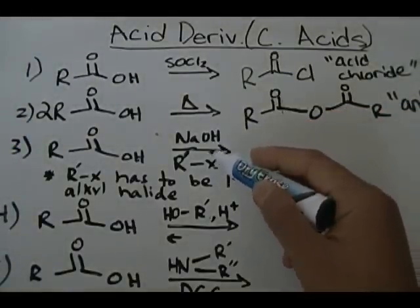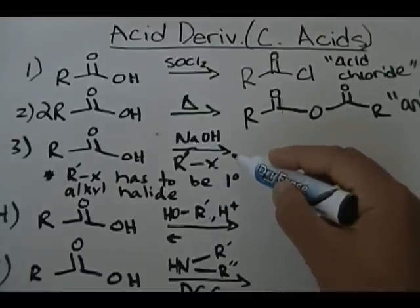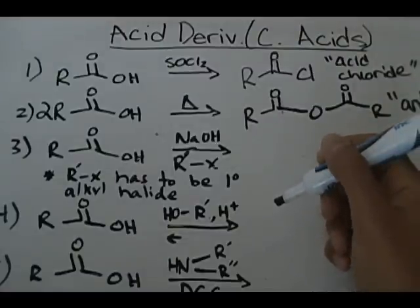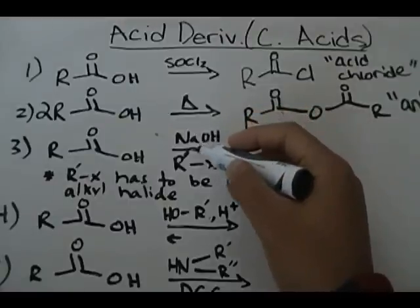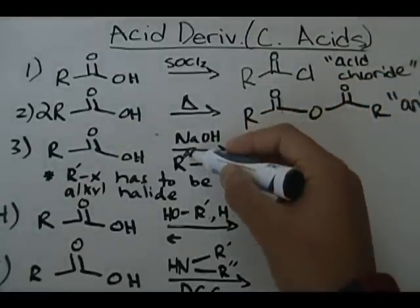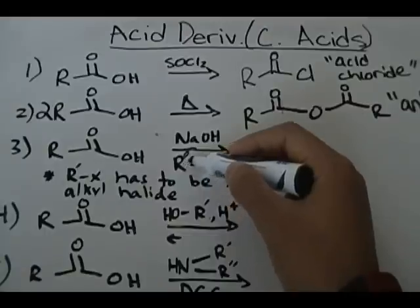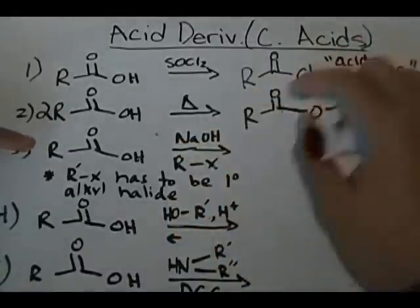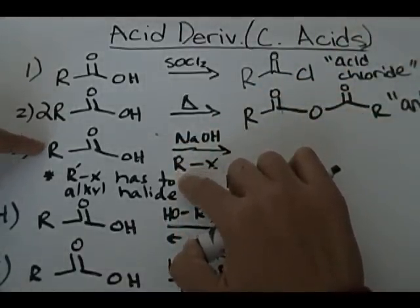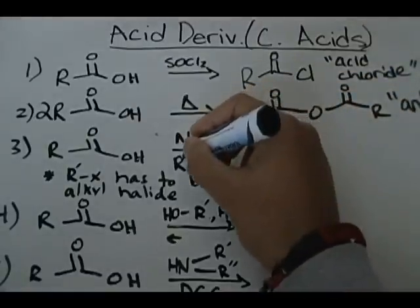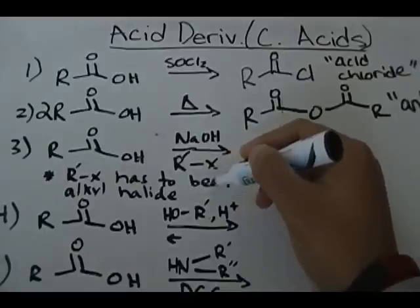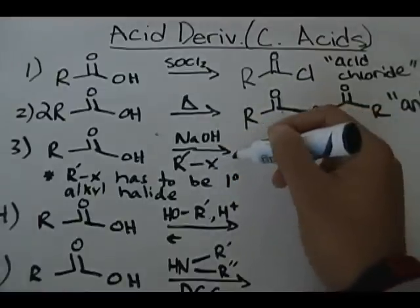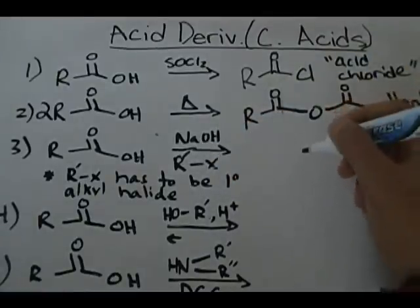I want to draw your attention to the little mark I have here — this R group, which is a carbon group, does not have to be the same as this other R group. Some people get confused thinking both R groups must be identical, but no — they could be completely different. This is the perfect segue into what an alkyl halide looks like: an alkyl halide is an alkyl group with a halogen attached to it.